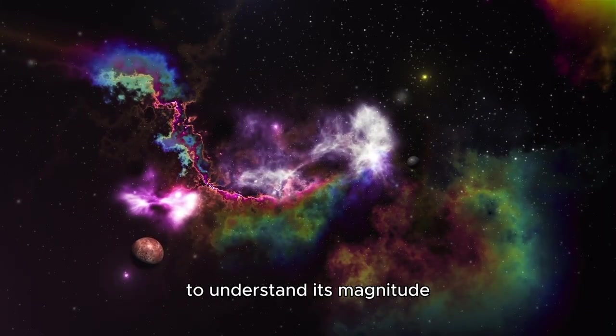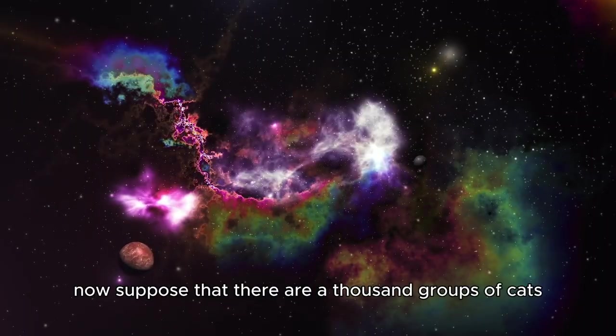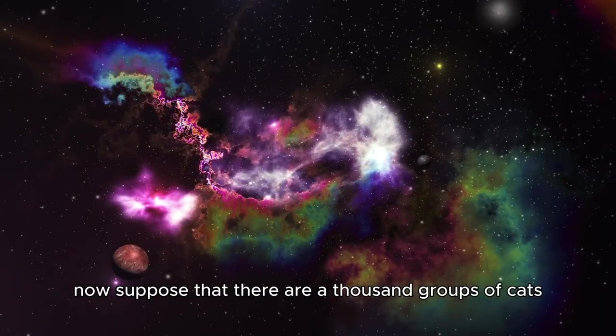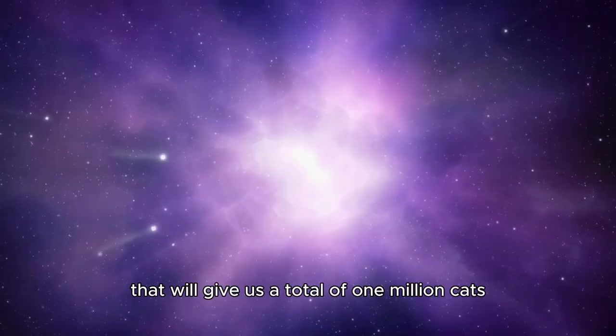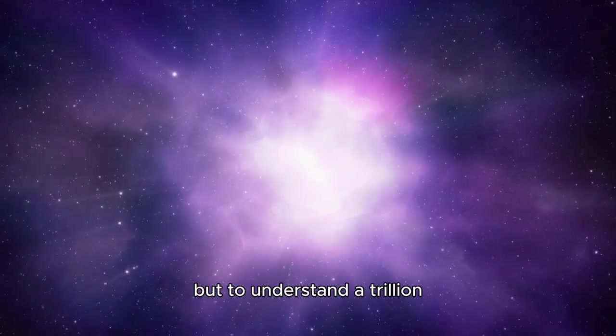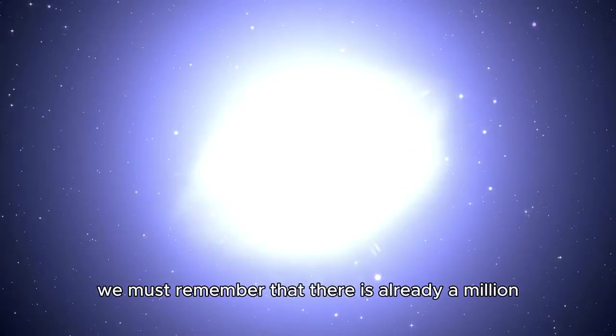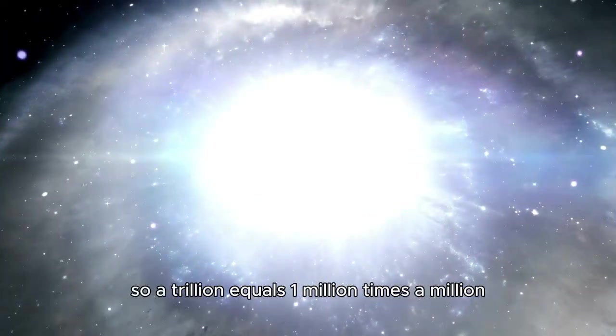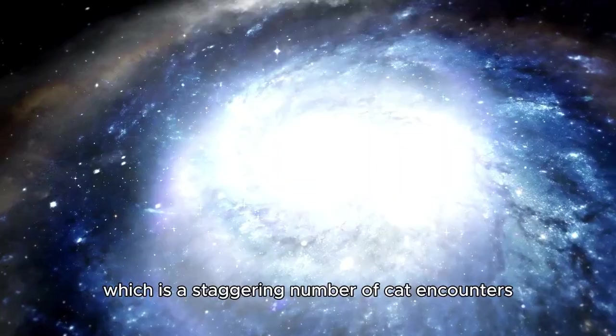To understand its magnitude, imagine a collection of one thousand cats. Now suppose that there are a thousand groups of cats, each consisting of a thousand cats. That will give us a total of one million cats. But to understand a trillion, we must remember that there is already a million represented in that number. So a trillion equals a million times a million.